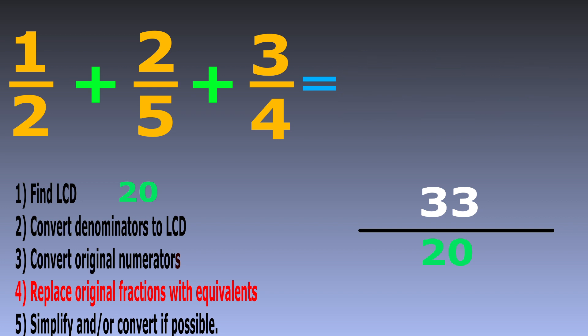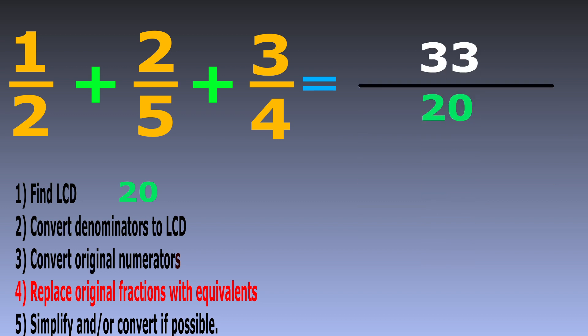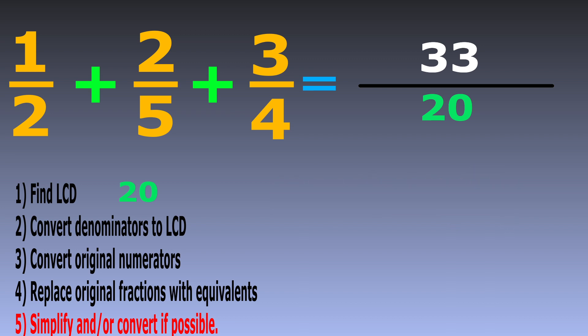Step 5: can we simplify this fraction? Well, 33 has only two factors — 3 and 11 — and neither 3 nor 11 are factors of 20. So 33 and 20 have no common factor; there's no number we can divide them both by, so this fraction is already in its simplest form. Since the numerator is bigger than the denominator, this is an improper fraction, so we can convert it to a mixed number.